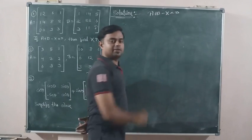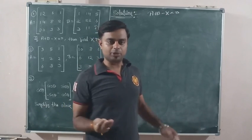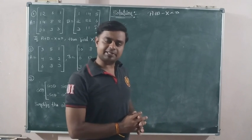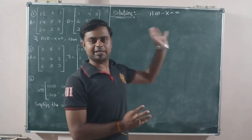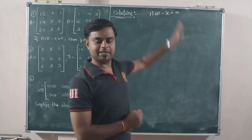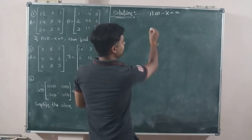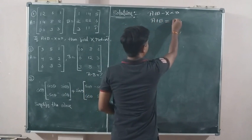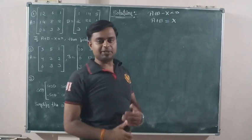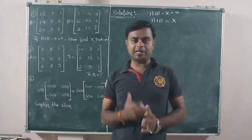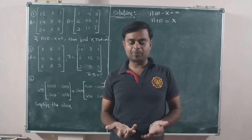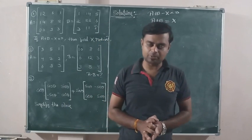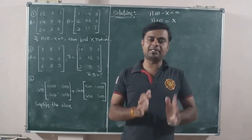If I move X from the left-hand side to the right-hand side, the sign of X is negative, so it becomes positive on the other side. So the equation becomes: A plus B equals X. That means the X matrix is simply the result of joining — that is, adding — matrix A and matrix B.